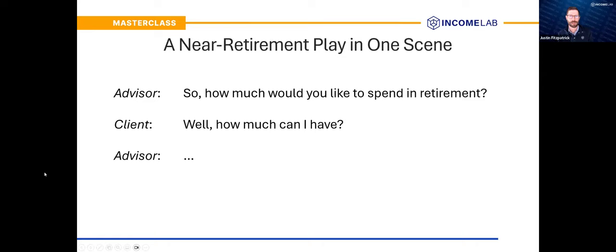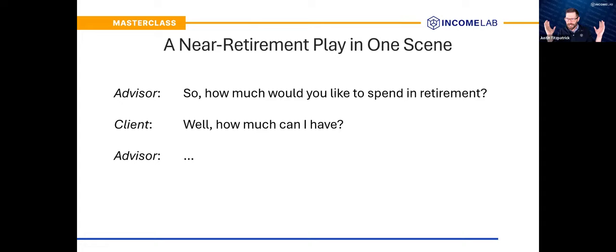A lot of advisors have had this experience: someone's nearing retirement and you ask 'how much would you like to spend?' and the client says 'well, what can I have?' No one's ever asked a 30-year-old how much they'd like to spend this year — they start with what do we have, how are we going to use it. The client wants to continue living the life they've already been living: 'I want to know how much I can afford. I knew when I was working — now I need you to tell me that.' That's why the key is not asking what they'd like, but figuring out how much they can afford.